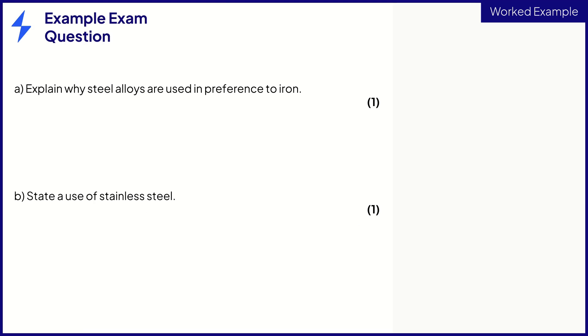Let's now have a look at some example exam questions which are about alloys. This question asks you to explain why steel alloys are used in preference to iron. This means that you must give a reason for steel being used instead of iron.